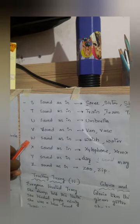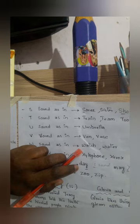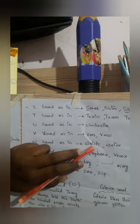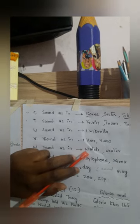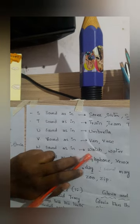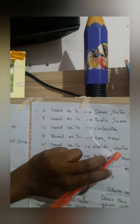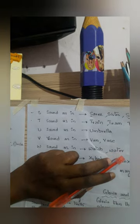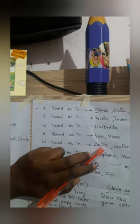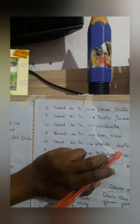Coming to W, it has a sound of 'w' — watch. This is watch — W, A, T, C, H — watch. W, A, T, E, R — water. It's not 'water', it's not 'watch' — it is watch and water.